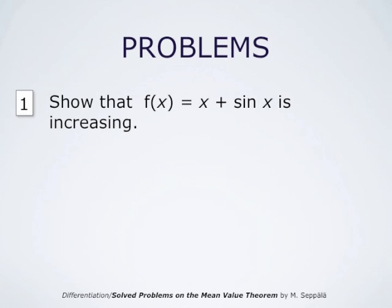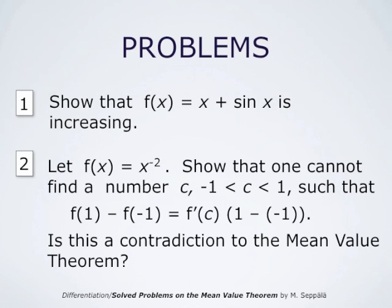In the first problem, we show that the function x plus sin(x) is increasing. In the second problem, we consider the function x to the power negative 2. We have to show that one cannot find a number c between negative 1 and 1 such that the statement of the mean value theorem applies — that is, f(1) minus f(-1) equals f'(c) times (1 minus (-1)) — and then ask whether this is a contradiction to the mean value theorem.